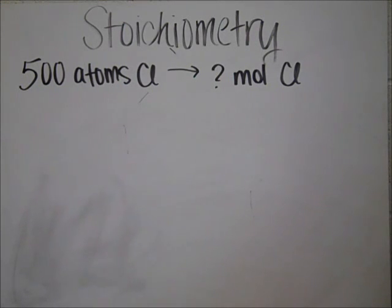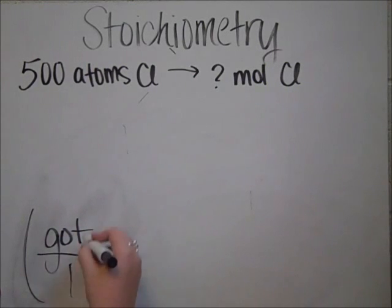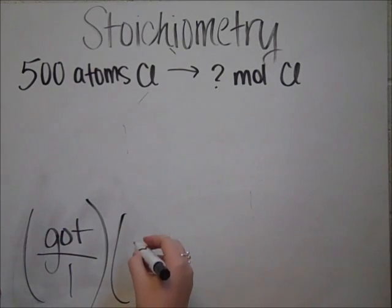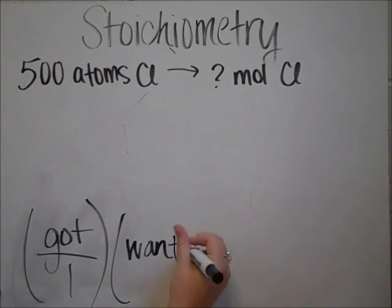So the first problem we're going to do is convert 500 atoms of chlorine to how many moles of chlorine. And so the first thing that Mrs. Weber teaches you is that there's a formula for stoichiometry, and it goes: you put what you got over 1, and then you put what you want over what you got.